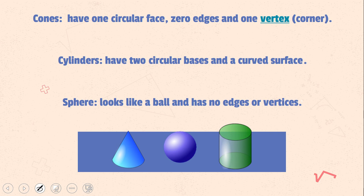Remember that cones have one circular face. They have no edges. Well, they have the one edge, which is the bottom. Again, it's curved. And one vertex, which is this corner.